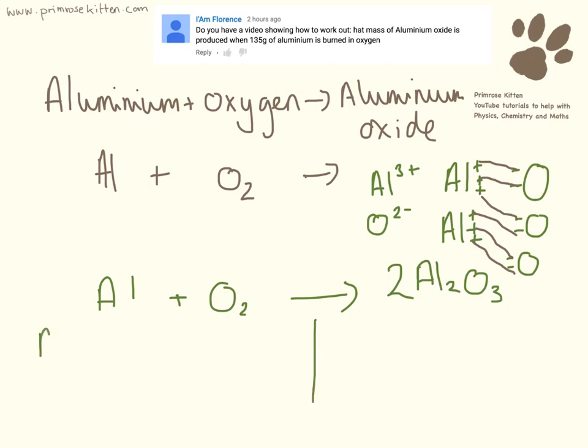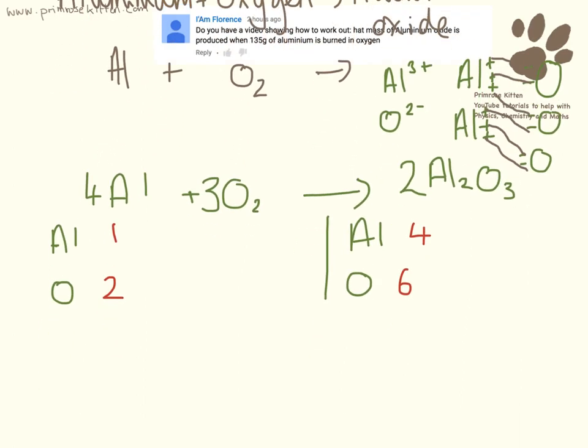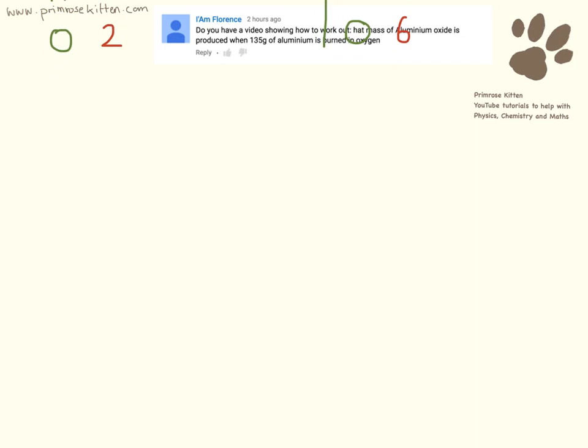If I just balance this properly for you. Aluminium, oxygen, aluminium, oxygen. At the moment I have 1 aluminium and 2 oxygens. I now have 4 aluminiums and 6 oxygens. So I need to get 6 oxygens over this side as well. The easiest way to do that when you've got a 2 is just to put a 3 in front of there. And I need to get 4 aluminiums over this side. The easiest way for me to do that is just to put a 4 in front of there. So let me just shift all of that up there and write my balanced equation out nice and neatly for you.